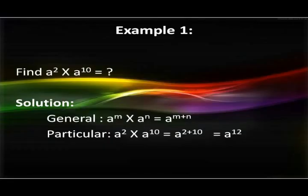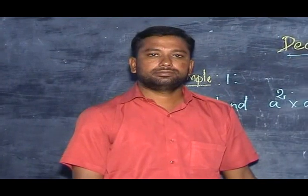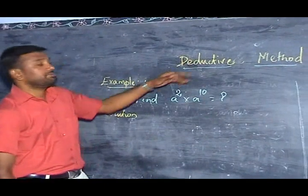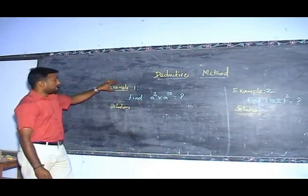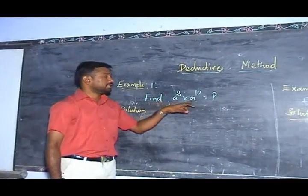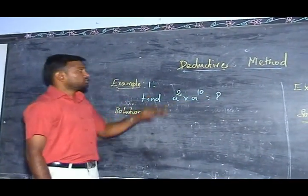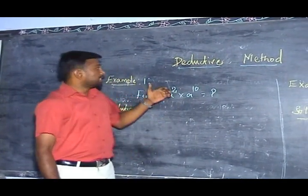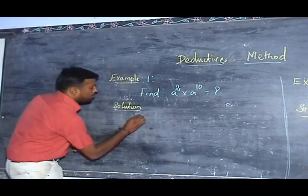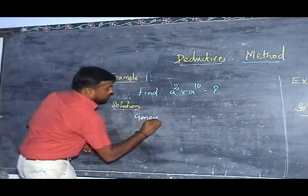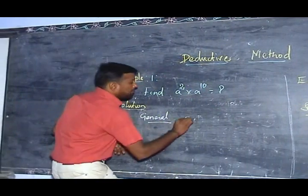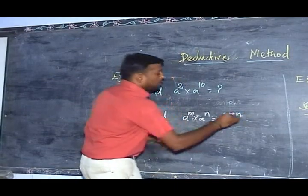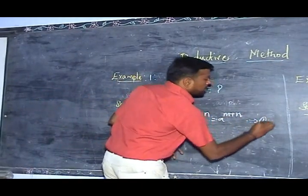Now I will highlight some examples of the detective method. For the first example: find a² × a¹⁰. Detective method comes from the word detection — it leads from general to particular. Therefore, first I take the general formula: aᵐ × aⁿ = aᵐ⁺ⁿ. We already know this formula, so I take it as equation 1.